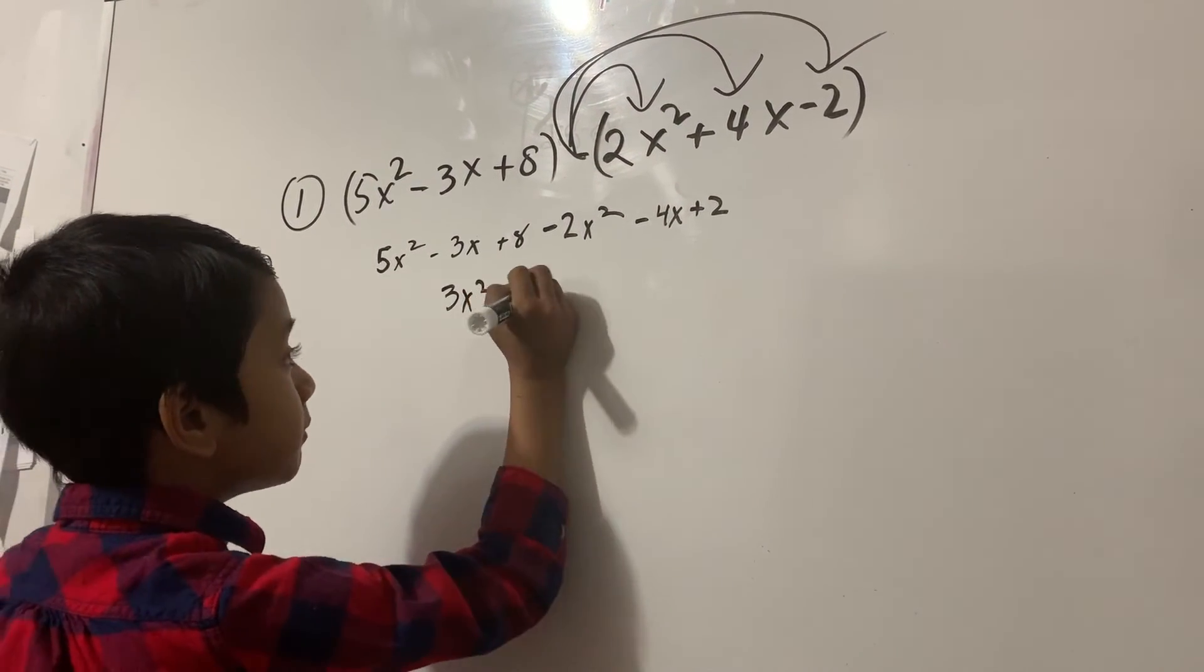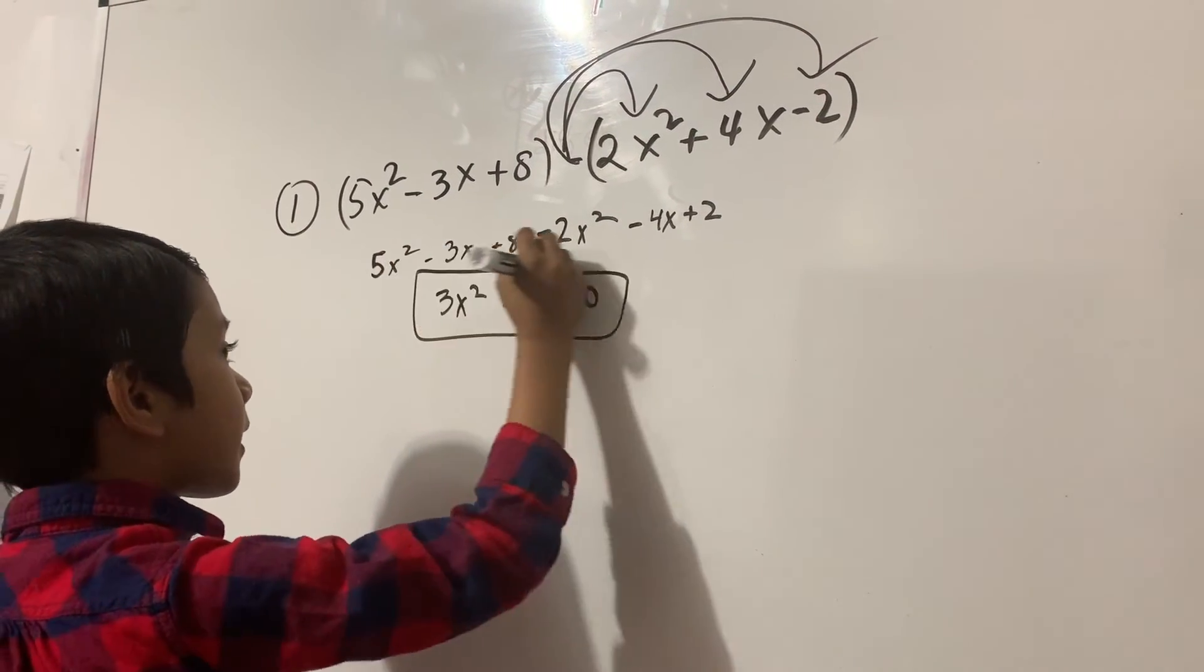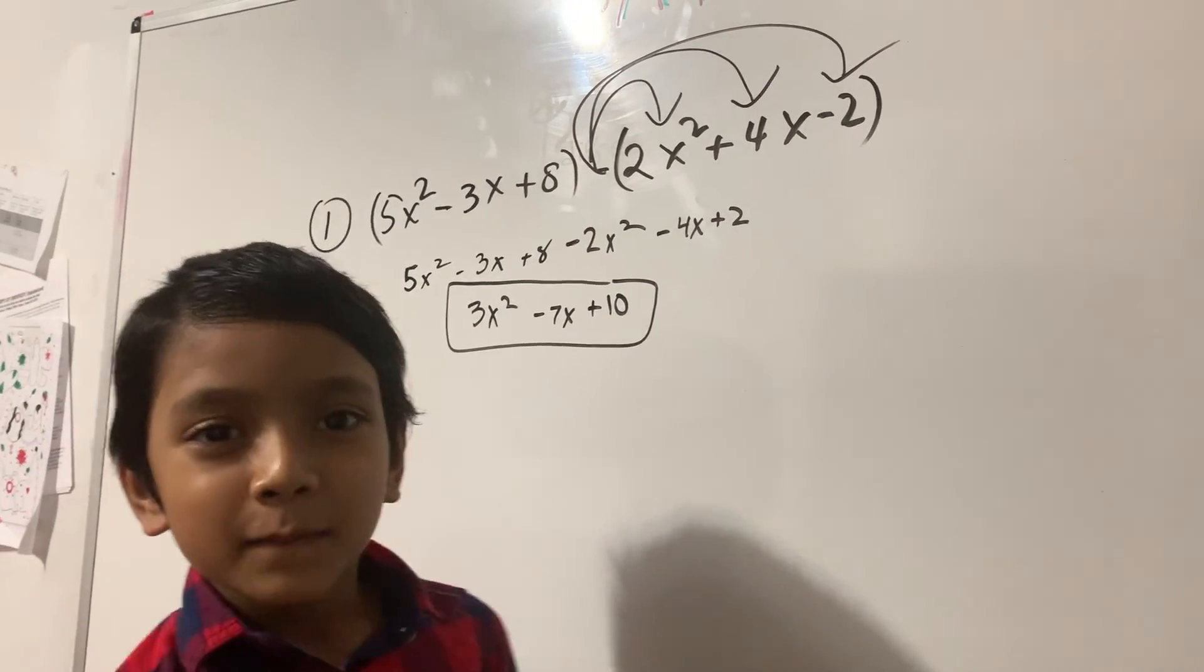So, 5x squared minus 2x squared is 3x squared, minus 3x minus 4x is minus 7x, and 8 plus 2 is 10. So 3x squared minus 7x plus 10.